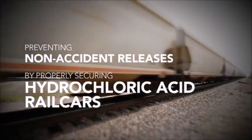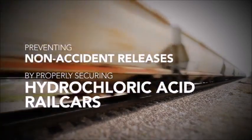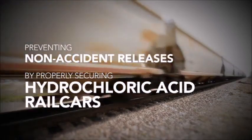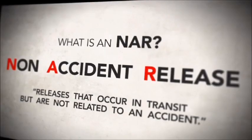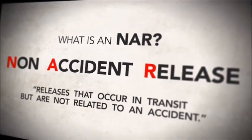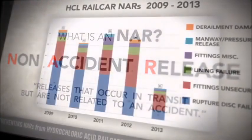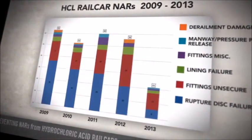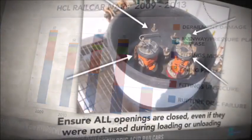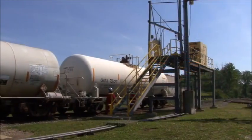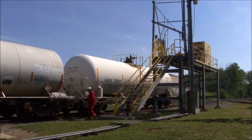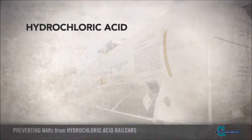Welcome to the Chlorine Institute's presentation on preventing non-accident releases, or NARs, by properly securing hydrochloric acid rail car shipments. During this presentation you will learn the definition of an NAR, see a review of hydrochloric acid tank car NAR data, and learn tips for preventing hydrochloric acid NARs. The tips provided are applicable for both loaded and residue rail car shipments. Hydrochloric acid may also be referred to as HCL throughout this video.